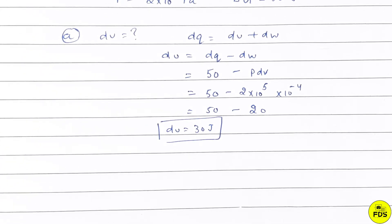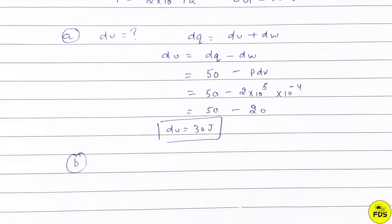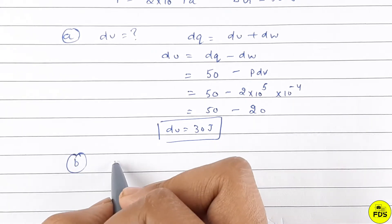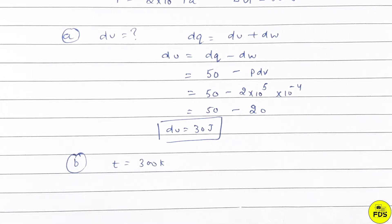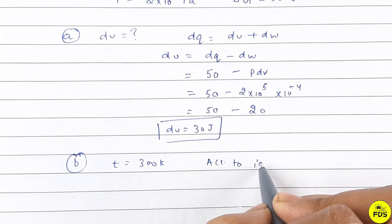In part B they asked for the number of moles in the gas if the initial temperature is 300 Kelvin. So in part B we have to find the number of moles given temperature is 300 Kelvin for an ideal gas situation.